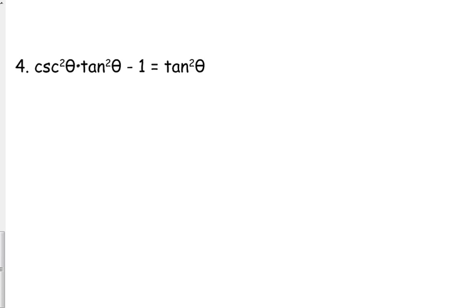Let's write cosecant, tangent, and tangent in terms of sine and cosine. So cosecant squared can be rewritten as one over sine squared. Tangent squared can be rewritten as sine squared over cosine squared. And we've still got that minus one on the end.